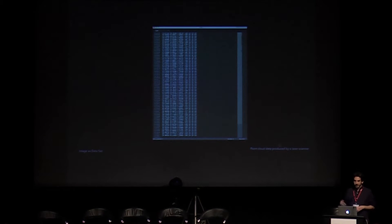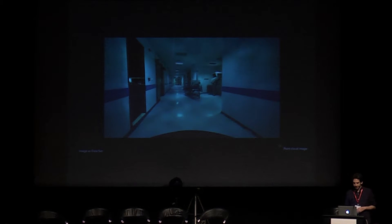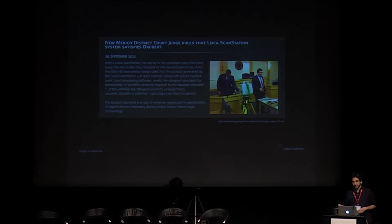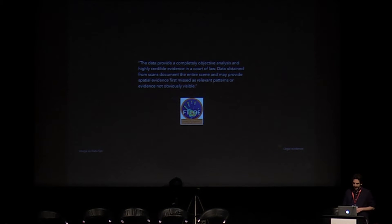As you can see here, there are 40 million lines, and each line refers to the coordinates of a point and the RGB data. Unlike other types of computer-generated imagery, these images have an indexical relationship to a place — they are based on their registration of data from a physical space. They constitute a new representation of reality. The technology is being deployed to capture crime scenes and present these as evidence in court. A recent Forensic Technology Organization report on laser scanners reads: 'The data provide a completely objective analysis and highly credible evidence in a court of law. Data obtained from scans document the entire scene and may provide spatial evidence first missed as relevant patterns or evidence not obviously visible.'